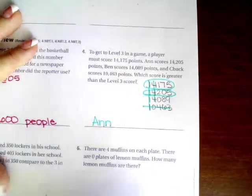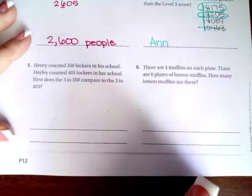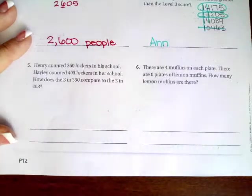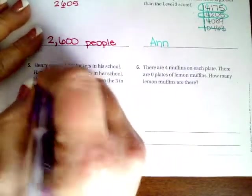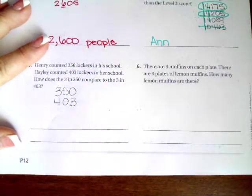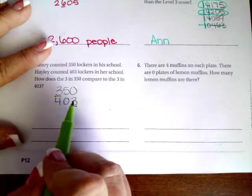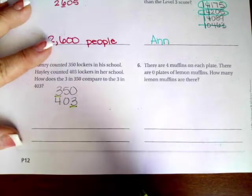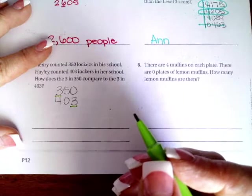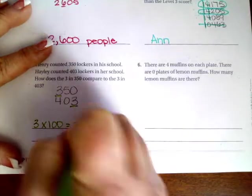Number five says Henry counted 350 lockers in his school. Haley counted 403 lockers in her school. How does the three in 350 compare to the three in 403? Let's write those down, so 350 and 403. We want to know about the threes. The three in this place is two places bigger than the place in this place, right? So three is very different from 300. How many times different? A hundred times different. So three times 100 equals 300, so 100 is going to be your answer.